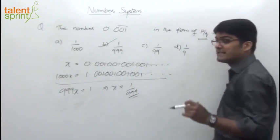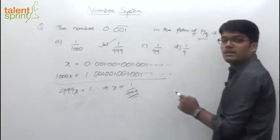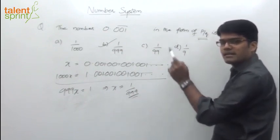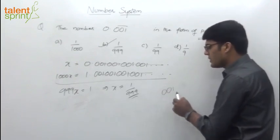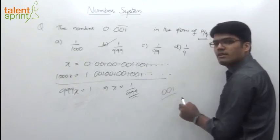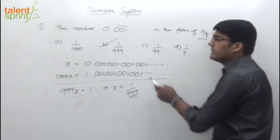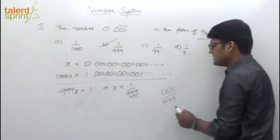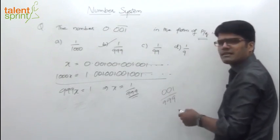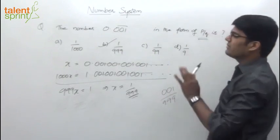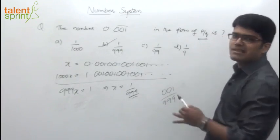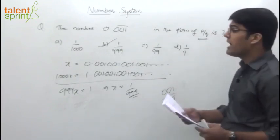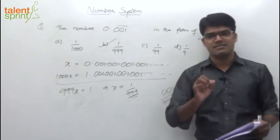Or the third way: what is the recurring part? It is 001. So write that in the numerator: 001. How many digits? 3. So 3 nines in the denominator. That gives 001 by 999, or 1 by 999. Just look at that and mark the answer. You don't have to put pen on paper — you can mark the answer in about 2 seconds if you have understood this method.